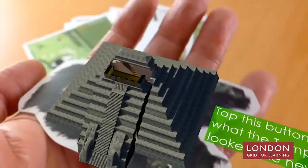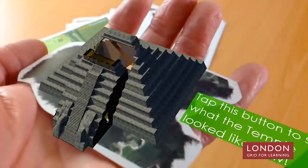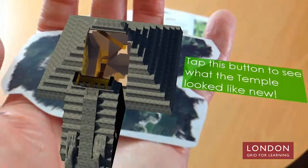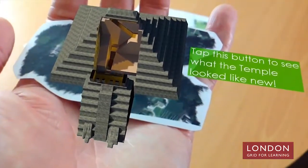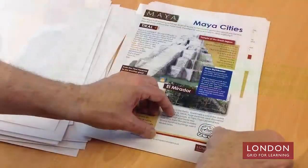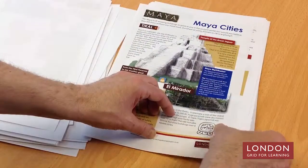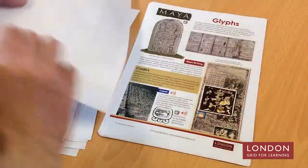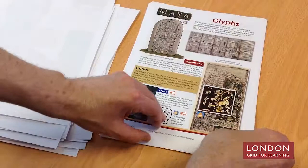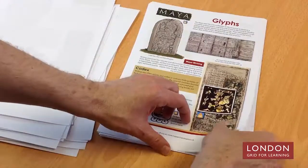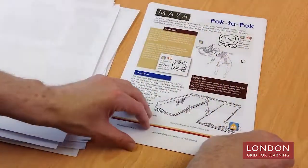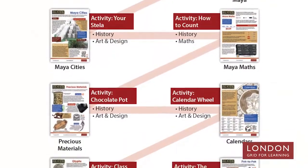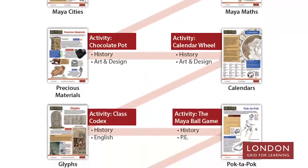Using our proven augmented reality technology, our journey through the Maya world will guide you and your pupils through the Maya culture and their incredible achievements. At the centre of the resource is the active worksheet pack that contains the teacher guide, the active worksheets themselves, and additional resources to accompany the ten activities which cover history, English, maths, art and PE.